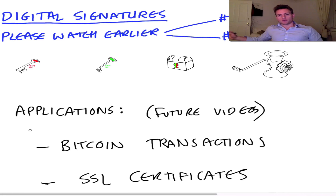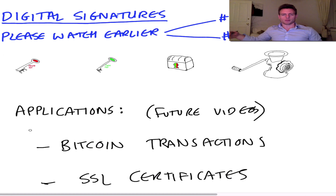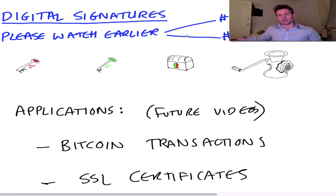Hello again. This is the third video in my mini series on cryptographic hash functions and their applications in things like SSL certificates, blockchain, Bitcoin, and all that stuff I'll move on to in a later video. Video number three is all about digital signatures, which is a very key concept that builds on the first two videos. The first video was about public keys, the second about cryptographic hash functions — please watch those two videos if you're not familiar with those concepts, because otherwise this video won't make a lot of sense.